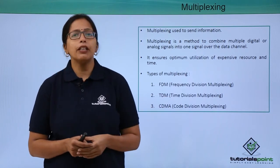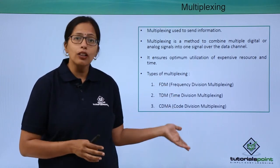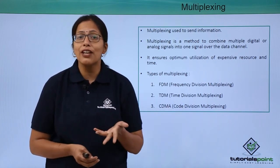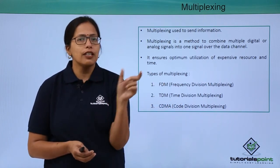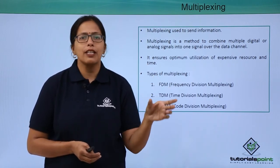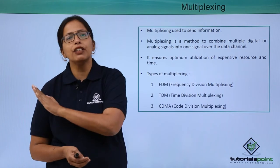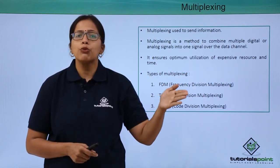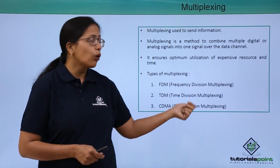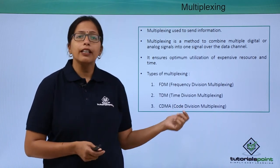The third is CDMA, which is Code Division Multiplexing. It is the fastest mode of sending data because all users are using the entire frequency. Then how does the receiver decipher which user is sending what? Each user is given a unique code, and before transmission of data, that code is appended so that the receiver can identify which user is sending the data over the frequency. Since each user gets the whole frequency spectrum, it is very fast and it is also automatically encrypted.